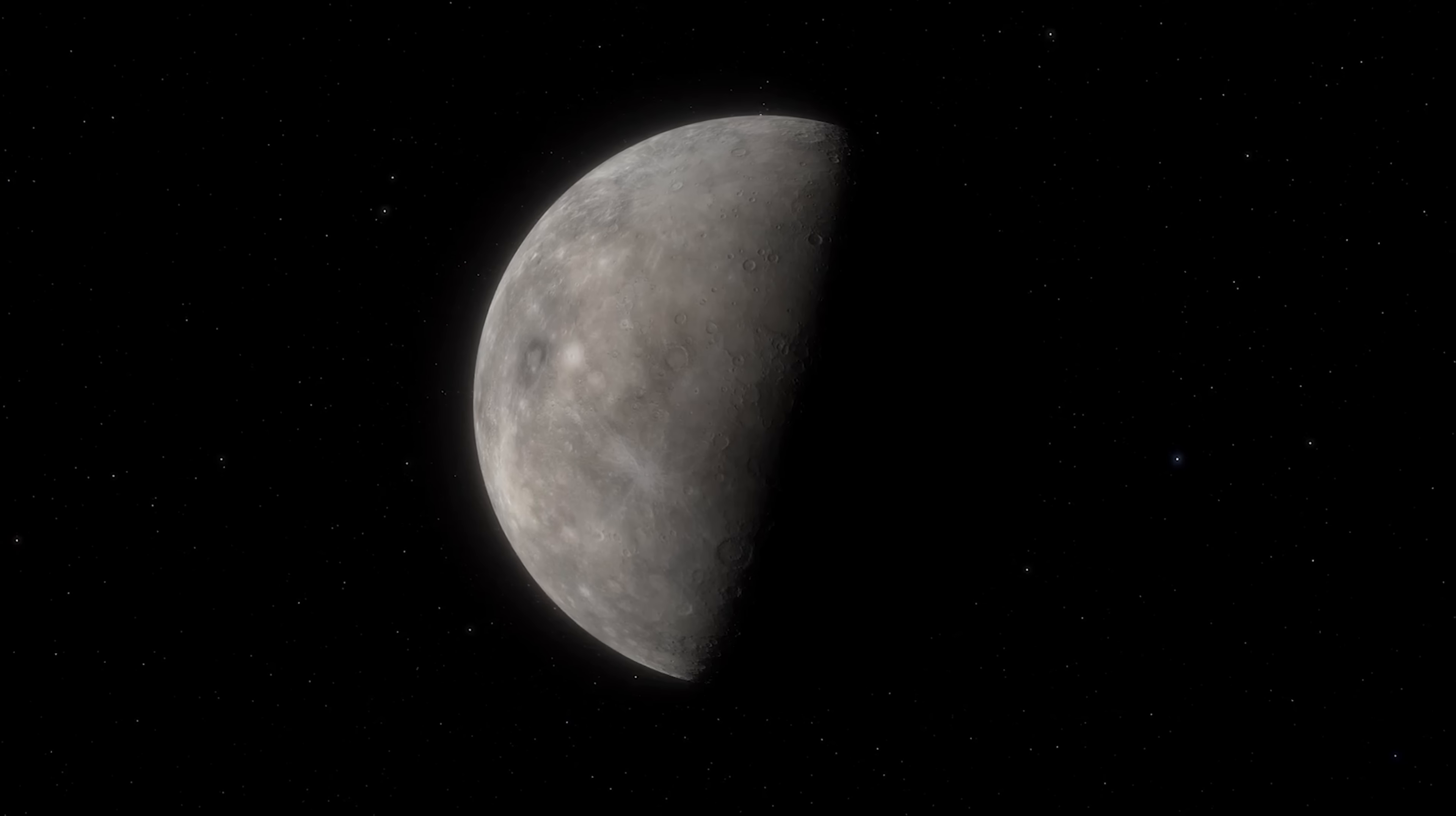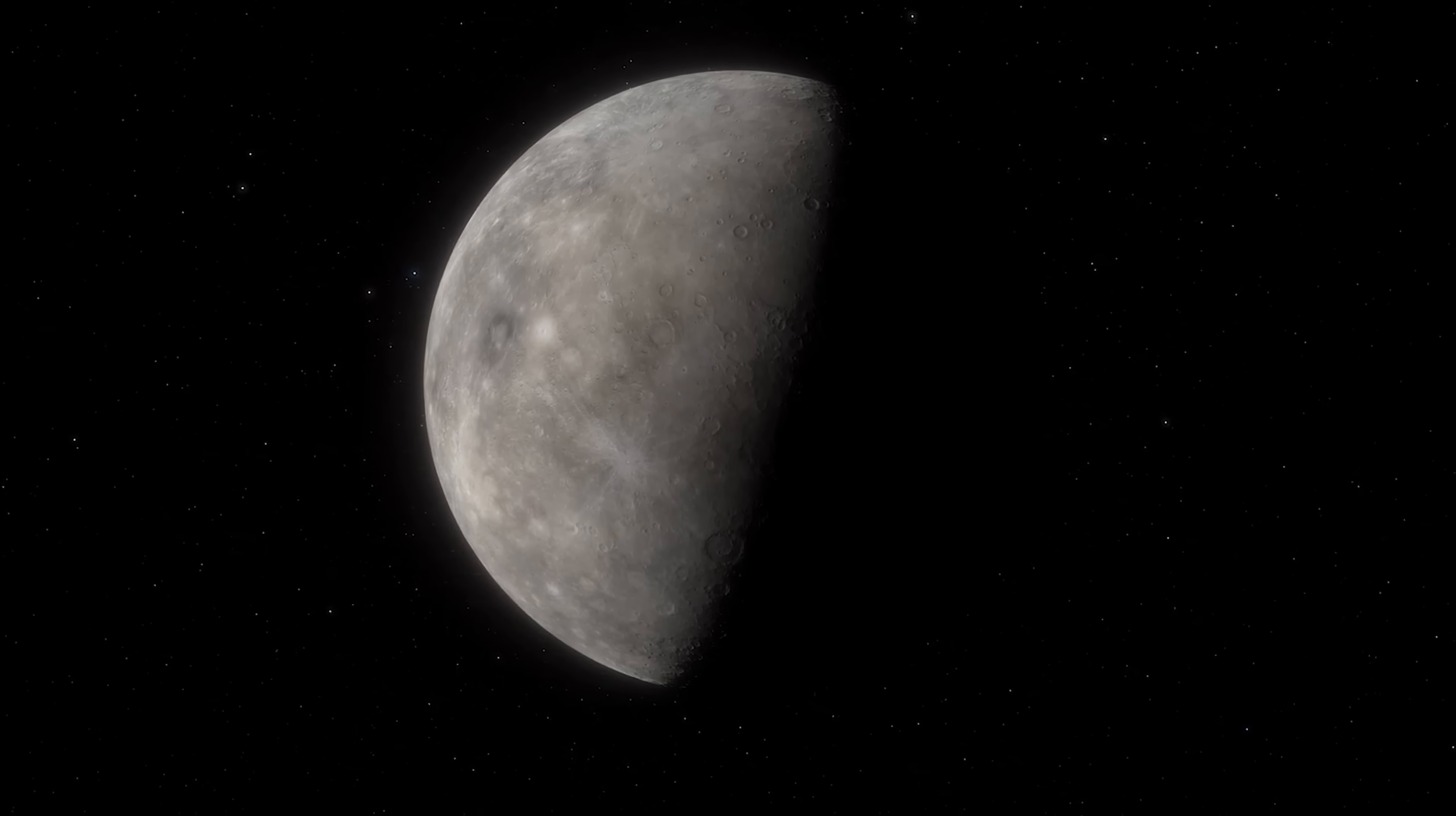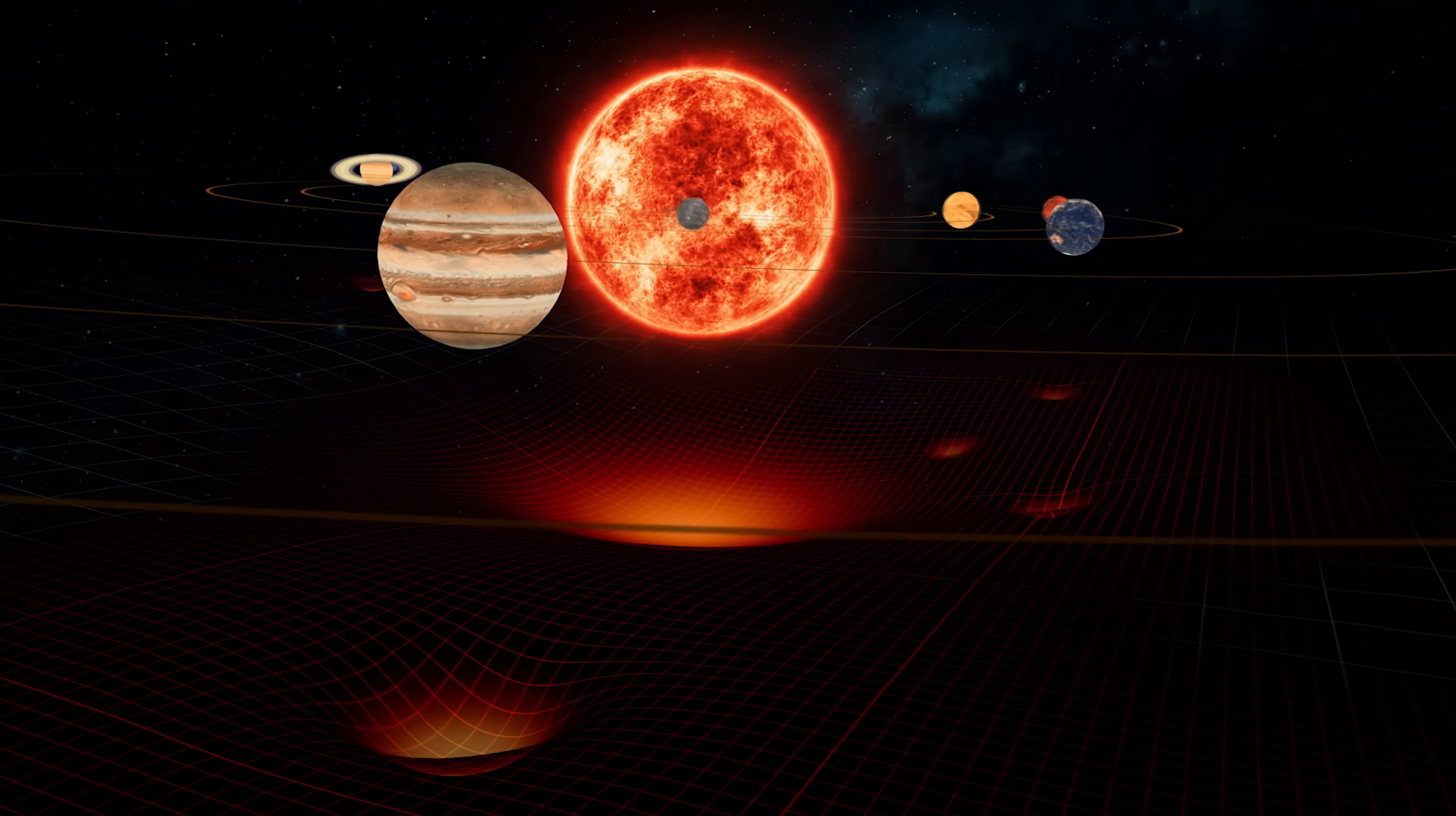In 1915, Einstein showed that the precession of Mercury's perihelion could be explained without the need to invoke the existence of Vulcan. His theory of general relativity, which describes how gravity affects space and time, offered a precise explanation for Mercury's orbit, something Newtonian laws couldn't do.